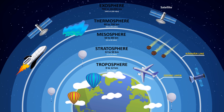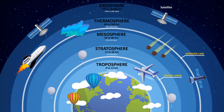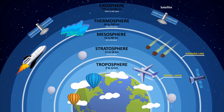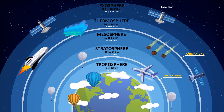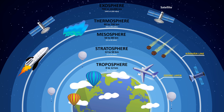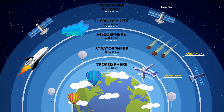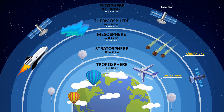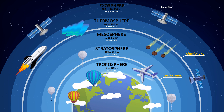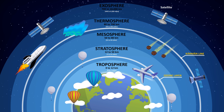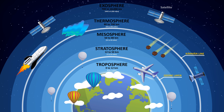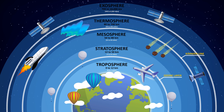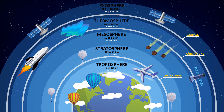Exosphere: the exosphere has very few atmospheric molecules, which can escape into space. Some scientists disagree that the exosphere is a part of the atmosphere and instead classify it as a part of outer space. There is no clear upper boundary as in other layers.